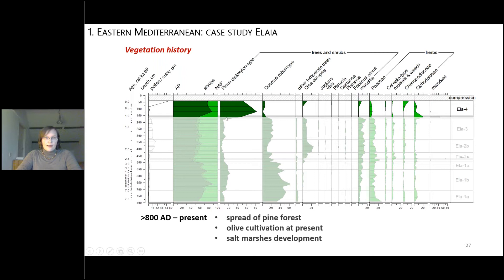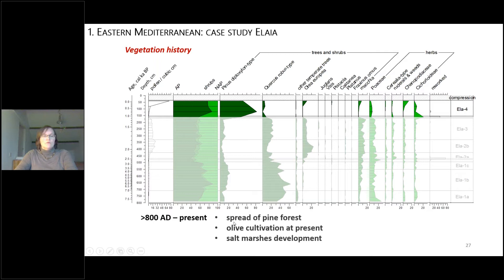After a hiatus in the sediment record, where some sediment is missing, we see that from after 800 AD to the present there was a spread of pine forests and a stronger decrease in oak forests. Only in modern times do we have olives again, as well as maquis and Chenopodiaceae indicating salt marsh development — basically a nice representation of today's landscape.